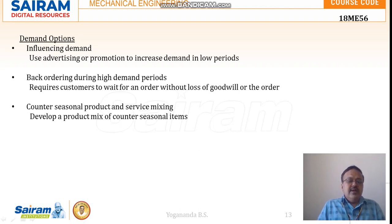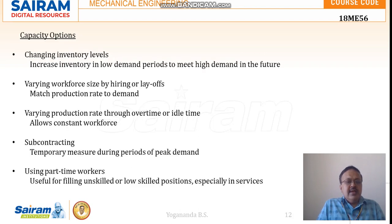Good morning friends. Now we are discussing the demand options in aggregate planning strategies. In the previous class we have seen the capacity options — depending on the capacity, whether we have excess capacity or capacity lower than the requirement, we make changes in our aggregate planning. For example, subcontracting is a temporary measure taken during periods of peak demand when we cannot meet the demand for our product.